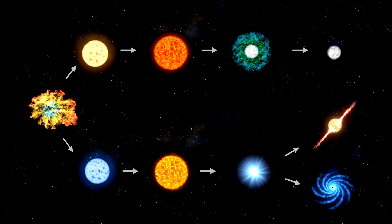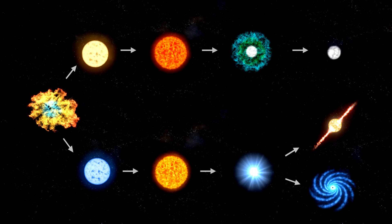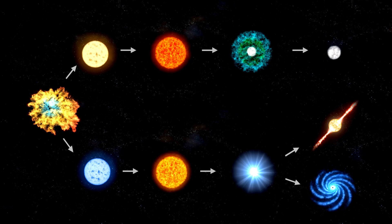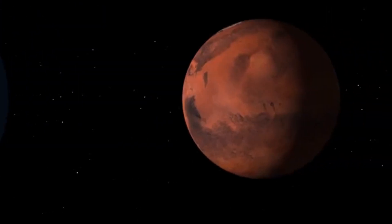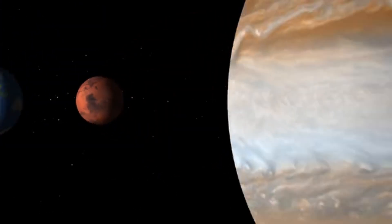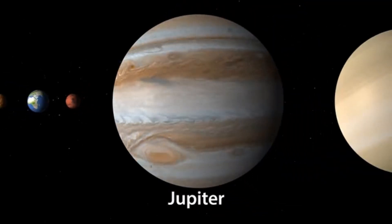Voyager 2 was originally sent to explore the outer planets: Jupiter, Saturn, Uranus, and Neptune. After completing that mission, its journey continued toward a far more distant goal—the edge of the solar system.